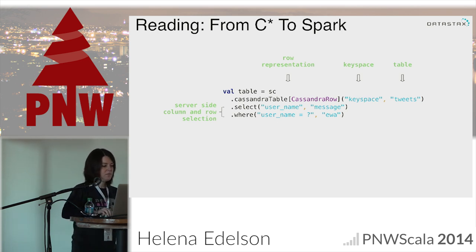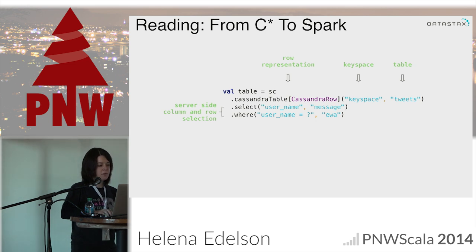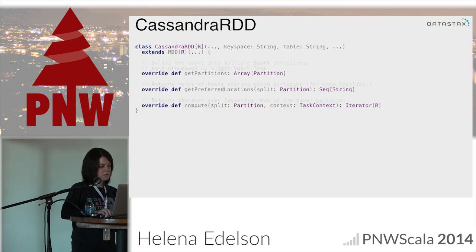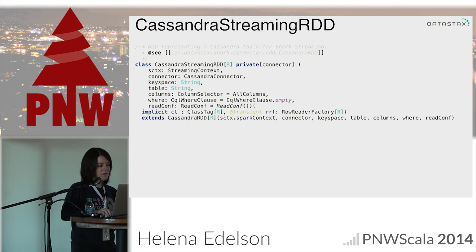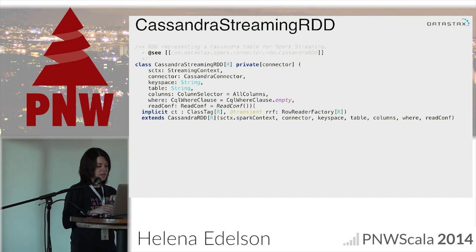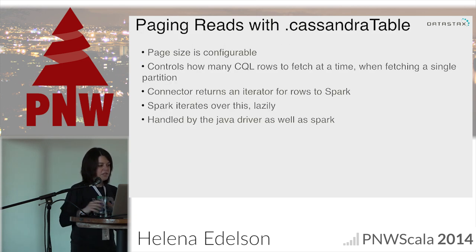Reading from Cassandra to Spark: you just call cassandraTable and do your selects and where clauses — all happening on the server. This is an example of what the Cassandra RDD looks like — it implements the RDD interface and does all the work for Cassandra transformations in the background. One of the first things I did in this repo was add streaming functionality, so I added this CassandraStreamingRDD.